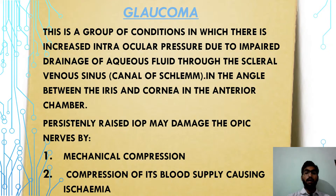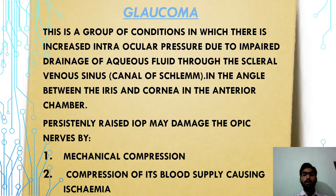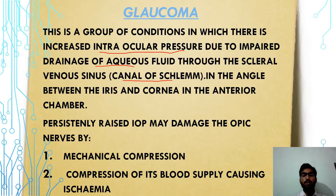Now I will talk about glaucoma. Glaucoma is a group of conditions in which there is increased intraocular pressure, referred to as IOP. This is due to the impaired drainage of aqueous fluid through the scleral venous sinus, also known as the canal of Schlemm. This occurs at the angle between the iris and cornea in the anterior chamber. The canal of Schlemm becomes blocked, causing the IOP to increase.